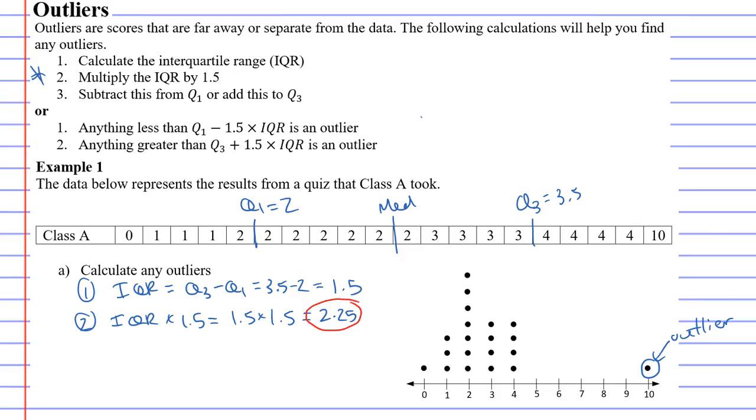And the way we do it is we look on our dot plot and we mark our quartile. So quartile 1 was the number 2. So this is quartile 1. And quartile 3 was the number 3.5. Next we're going to go from our quartile and we're going to move 2.25 either to the left or the right.